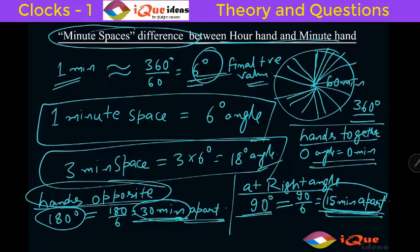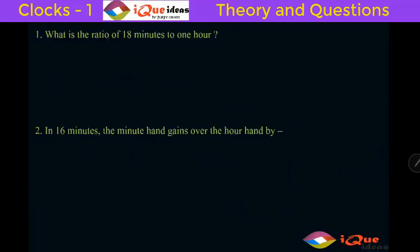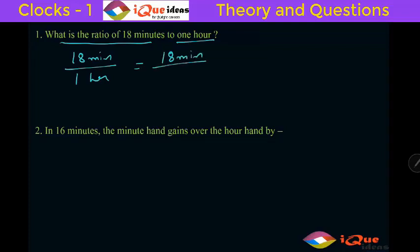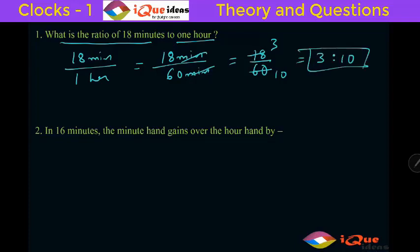Let us take up some questions now. The first question says: what is the ratio of 18 minutes to 1 hour? Whenever we take a ratio we must make sure they are in the same units. So it is 18 minutes divided by 60 minutes. The minutes cancel, giving 18 by 60. Simplifying, the answer is 3 is to 10.